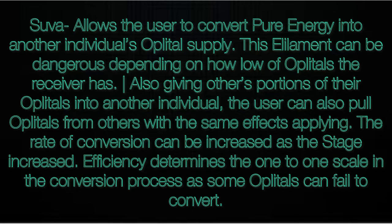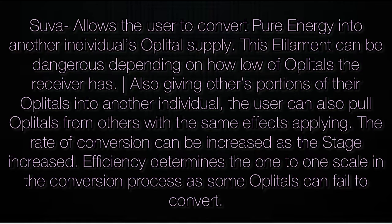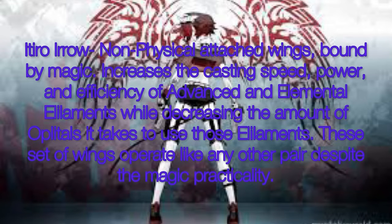Suva allows the user to convert pure energy into another individual's oplotal supply. This can be dangerous depending on how low the receiver's oplotals are. The user can also pull oplotals from others, with the same effects applying. The rate of conversion can be increased as the stage increases; efficiency determines the one-to-one scale of the conversion process, as some oplotals can fail to convert.